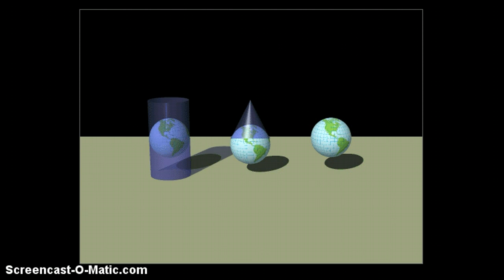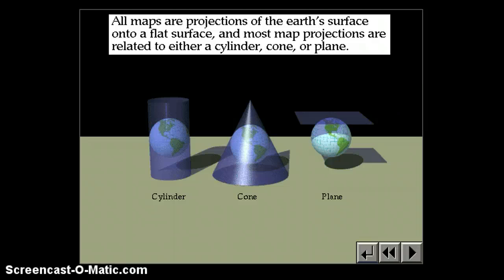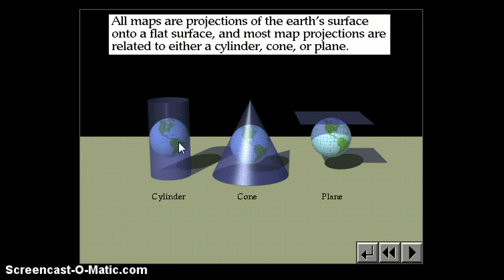So we have this concept of map projections. A projection is just a mathematical model to get from a round Earth to a flat map. There are three main types of projections. You can wrap a cylinder around the Earth, touching at the equator, and open it up — that creates something called a Mercator projection.